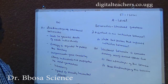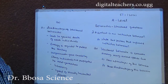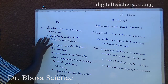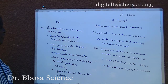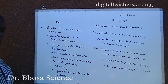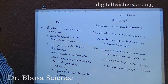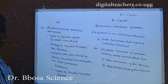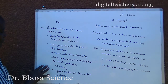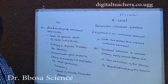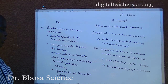B. Number 2 — disadvantages of territorial behaviors are: 1. Leads to genetic death of weak individuals. 2. Energy is required to protect the territory. 3. Unfavorable genes carried by strong individuals are propagated to the next generation. 4. Inbreeding. 5. Spread of sexually transmitted diseases.